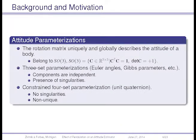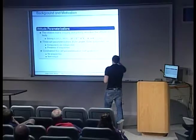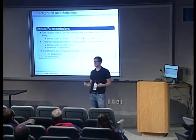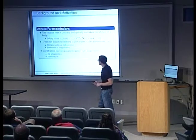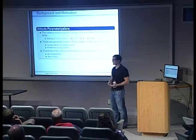Another issue with attitude determination is the issue of attitude parameterizations. A rotation matrix uniquely and globally defines the attitude of a rigid body. Rotation matrices belong to the special orthogonal group of rigid body rotations, denoted SO3 — the set of all orthonormal matrices with determinant equal to plus one. However, rotation matrices aren't normally used within estimation algorithms. Usually a rotation matrix is first parameterized, and three-parameter parameterizations have been used, such as Euler angles and Gibbs parameters.